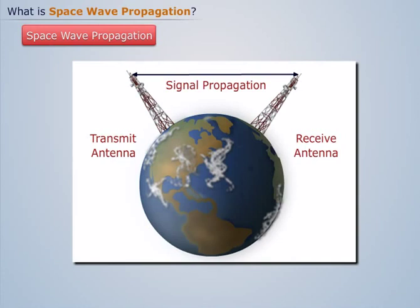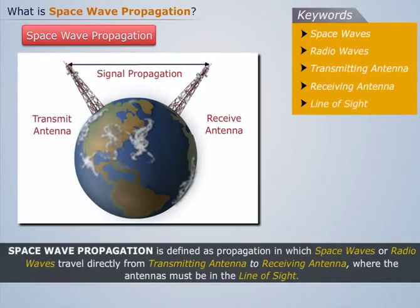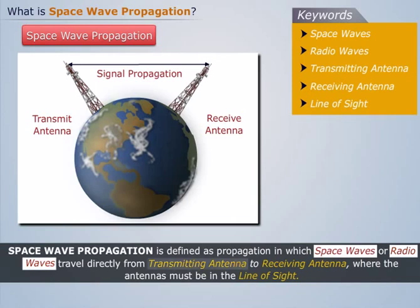Thus we can say that space wave propagation is defined as propagation in which space waves or radio waves travel directly from transmitting antenna to receiving antenna, where the antennas must be in the line of sight.